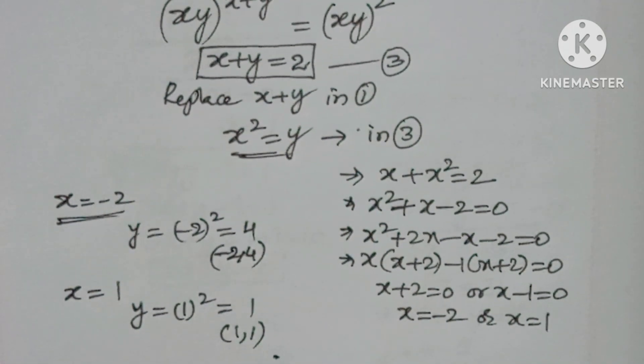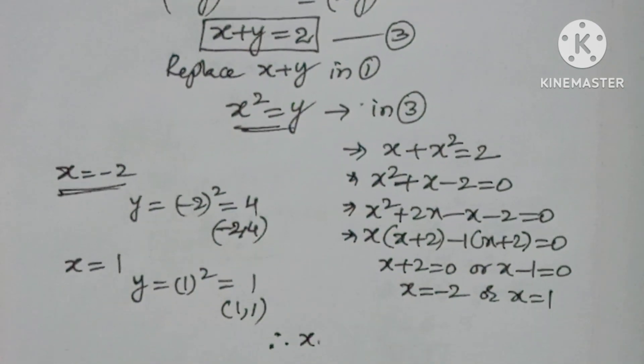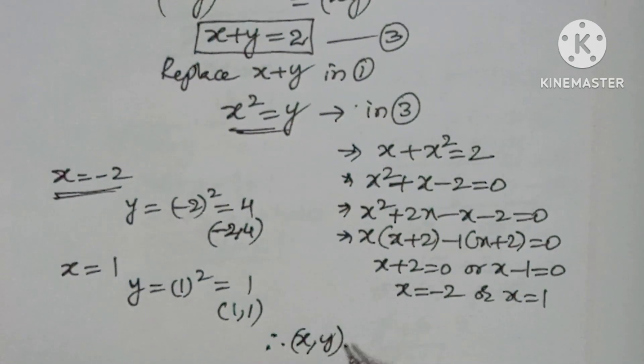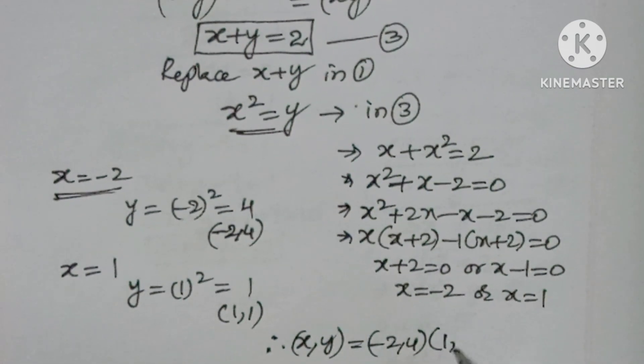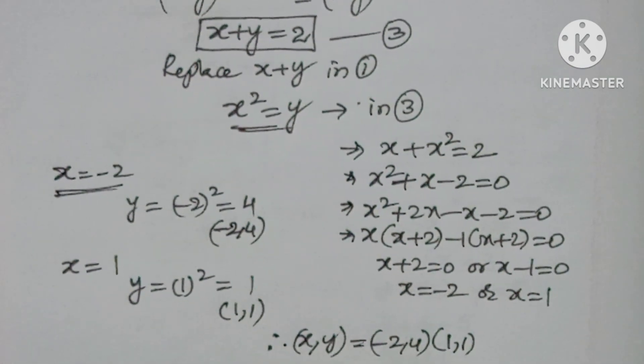Therefore, x comma y will be minus 2 comma 4, and 1 comma 1. Now I hope you understood the video.